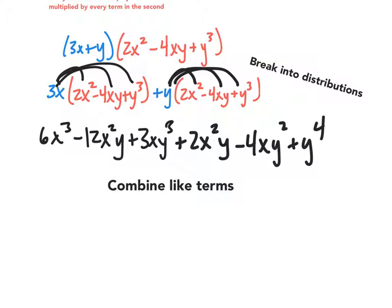Now we've just got to combine like terms. 6x cubed - that's the only thing with just an x cubed, so we have 6x cubed. Negative 12x squared y, and then here I have an x squared y. So negative 12 plus 2 would be minus 10x squared y.